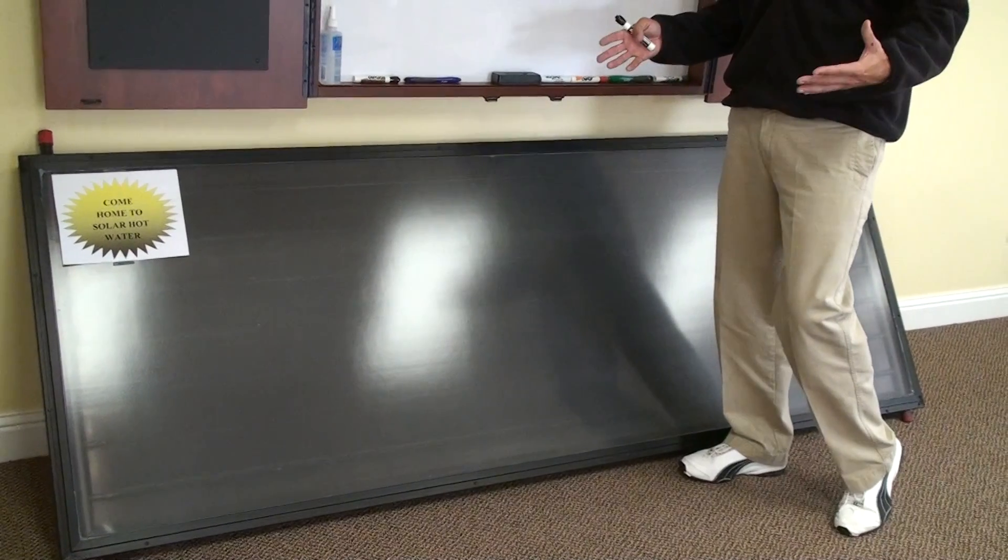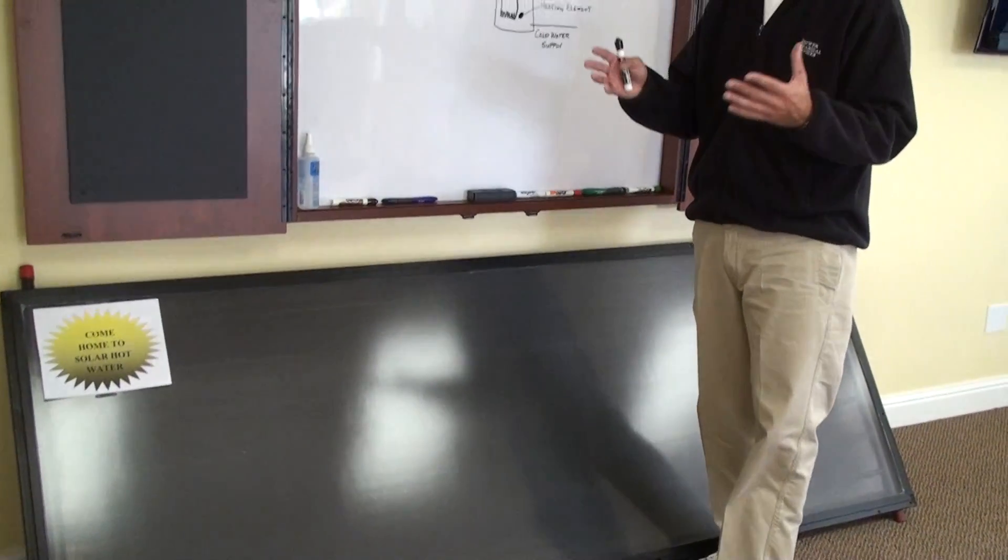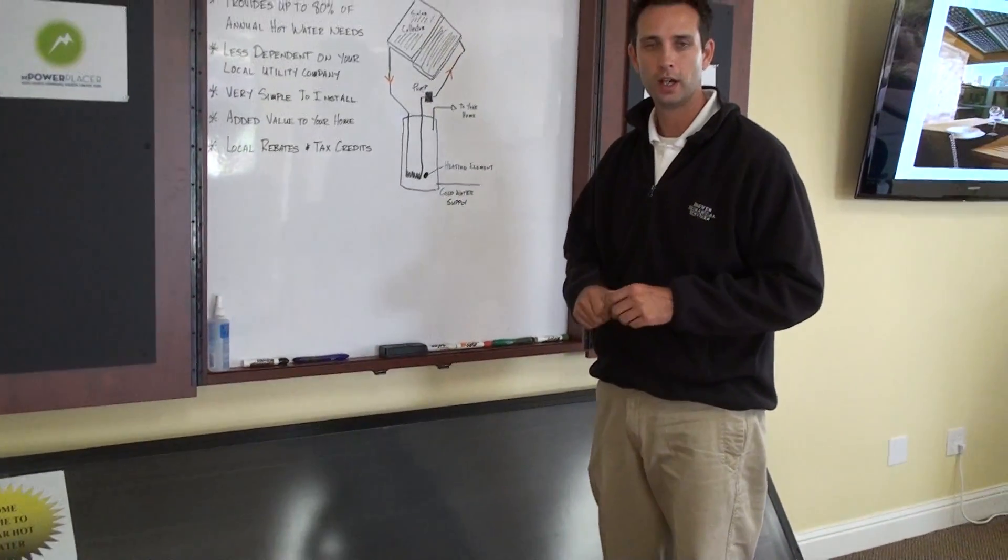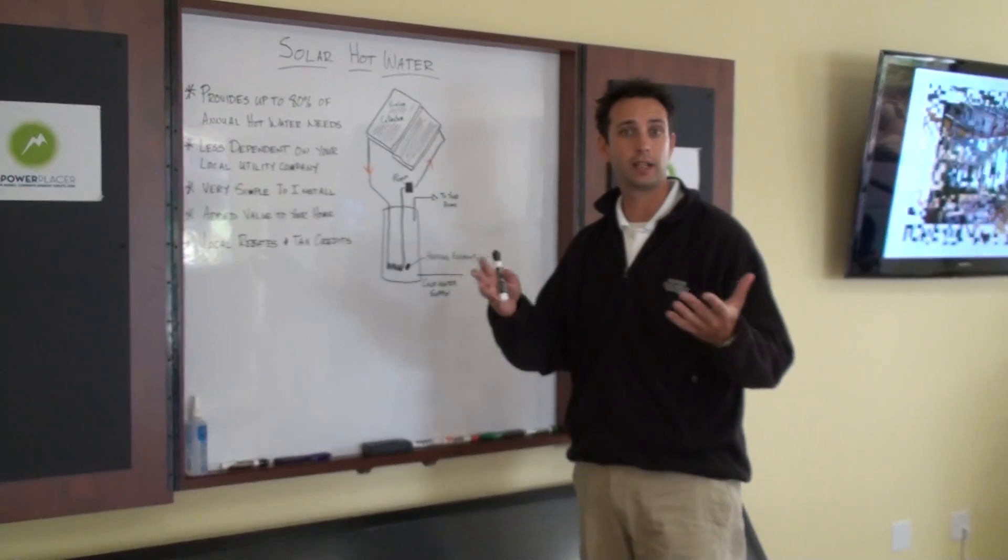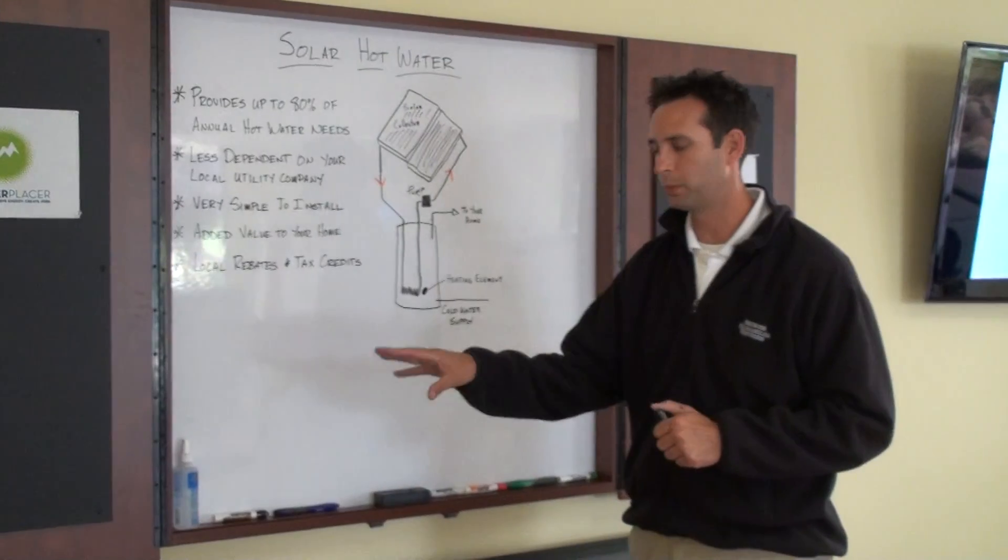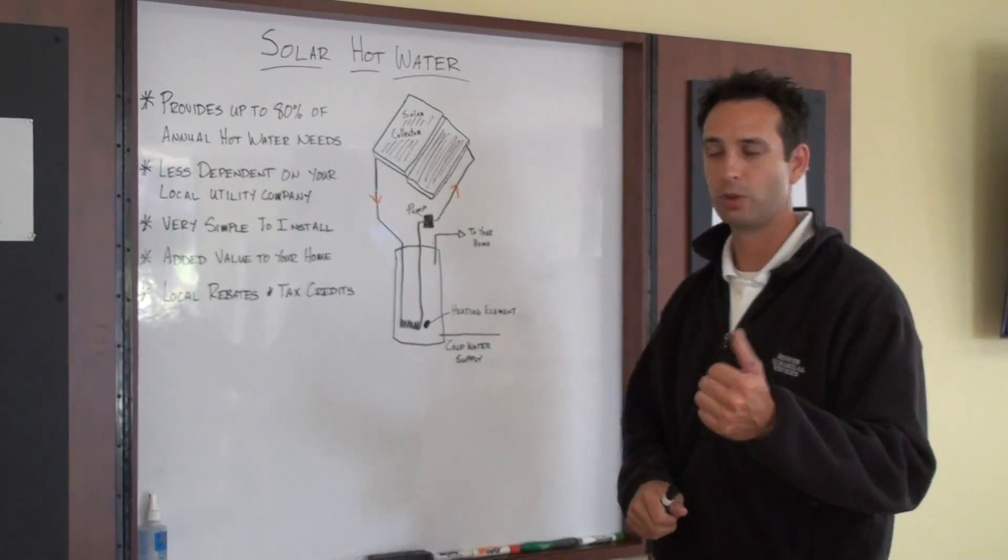If you compare that to solar electric, that can take upwards of 400, even 500 square feet of your roof space. So very simple install. In fact, most installations can only take a day, maybe two days. So you're really going to be able to use that solar hot water sooner than later.